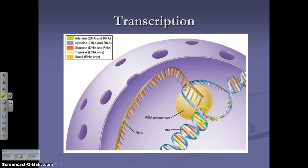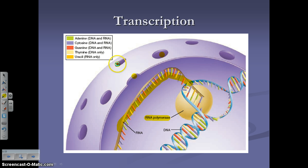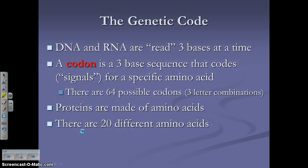Here's transcription happening. Helicase unzips the DNA molecule, and RNA polymerase attaches to the DNA and builds a single-stranded molecule of RNA, small enough to fit through the nuclear pores. For example, if our DNA sequence is A, G, C, the complementary mRNA sequence would be U, C, G. If we had T, C, C on the DNA, the RNA would be A, G, G.